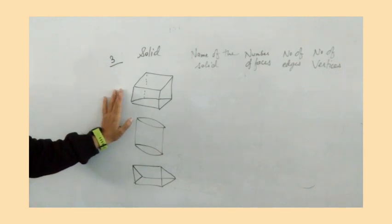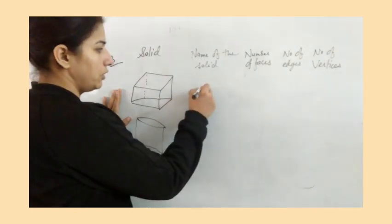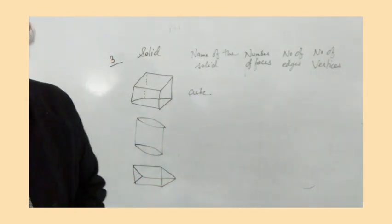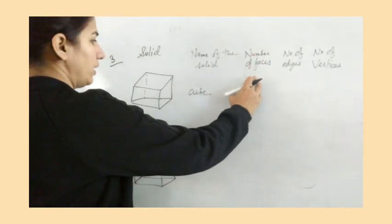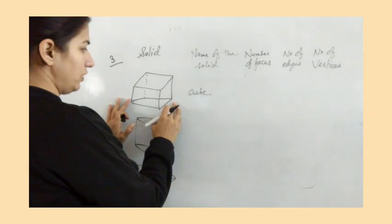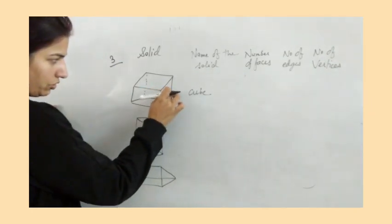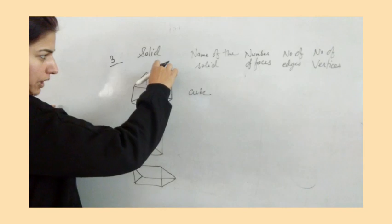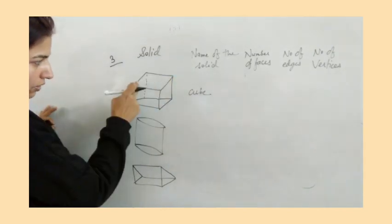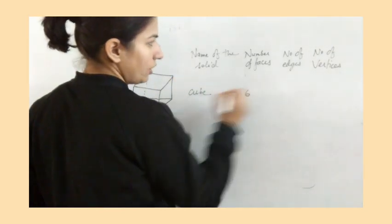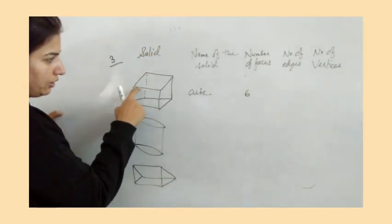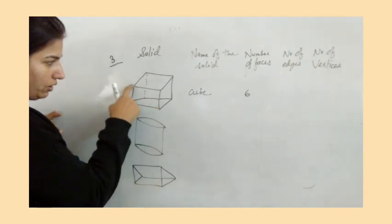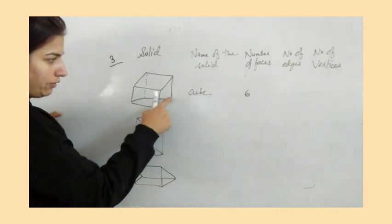What is the name of this solid figure? This is a cube. Now we have to tell the number of faces. In this cube we have six faces — one, two, three, and one behind, four, five, and six.